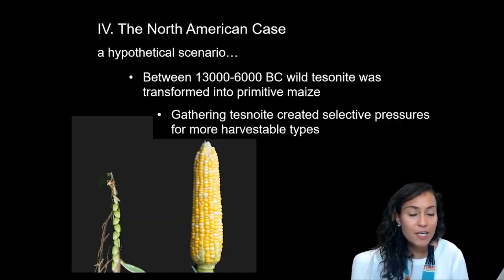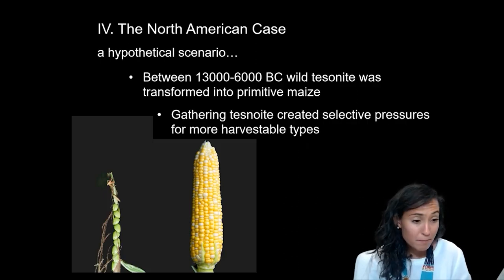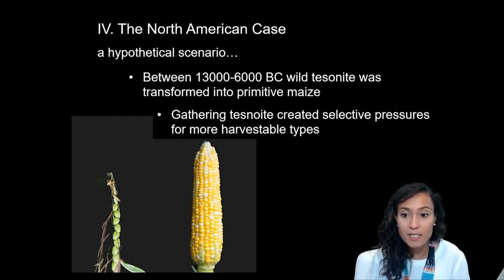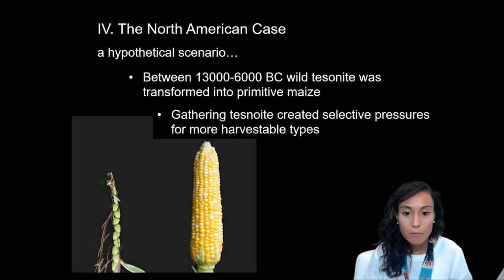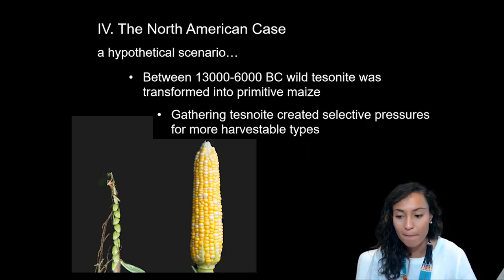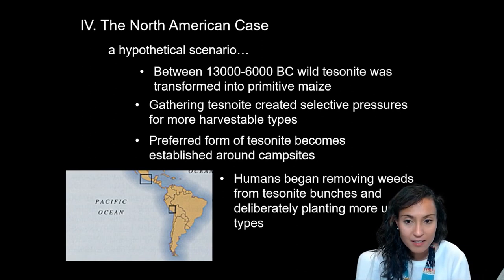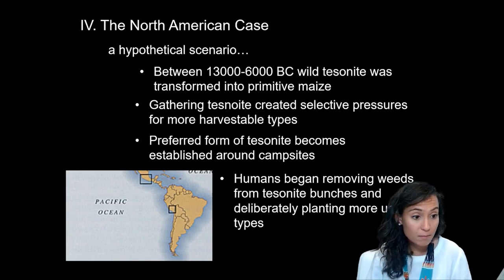The hypothetical scenario for maize domestication in the Mesoamerican Southwest region goes like this. Sometime between 1,300 and 6,000 years ago, wild teosinte was transformed into primitive corn through unintentional human selection. Gathering teosinte would lead to selective pressures for harvestable types of grass, with spikes shrunken into bunches. You can see in the image behind me: on the left is a teosinte seed, and on the right is a fully domesticated version of corn. These bunches of teosinte would have made it harder for the seeds to scatter. These teosinte plant colonies would diverge towards greater domestic variation from which humans could select the most useful types.